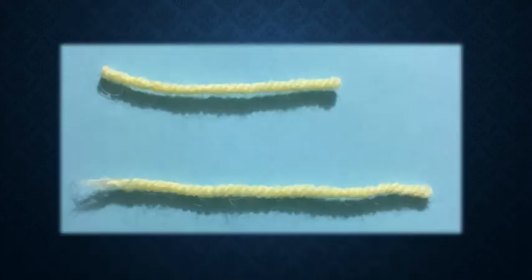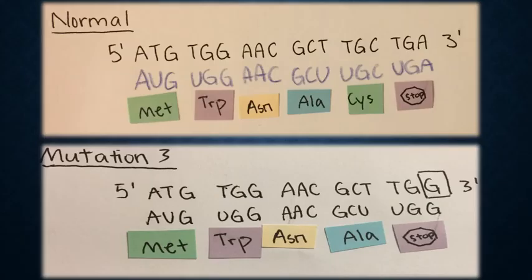Now back to our yarn strand example. The bottom yarn, which is the mutation strand, is still longer because since the stop codon is changed to an amino acid, it can keep transcribing and translating codons until the next stop codon appears.